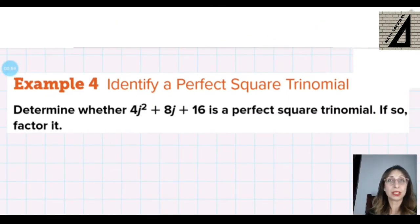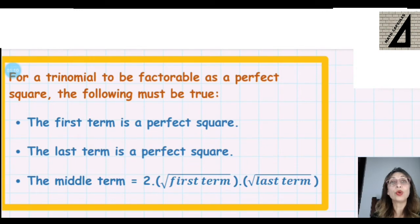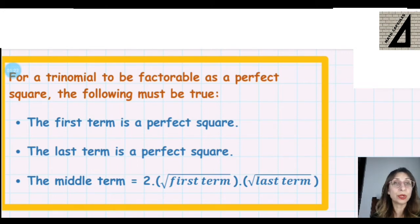Now, given an example, determine whether a trinomial is a perfect square trinomial and if so, factor it. For a trinomial to be factorable as a perfect square, three conditions must be satisfied: the first term is a perfect square, the last term is a perfect square, and the middle term is equal to 2 times the square root of the first term times the square root of the last term.